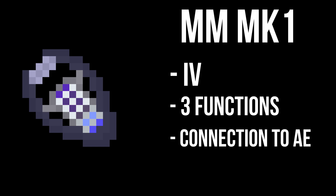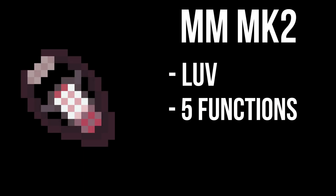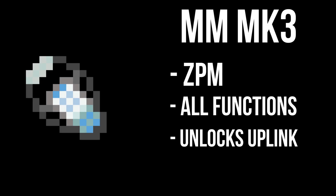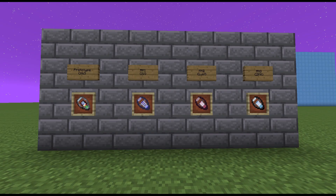A big jump from the prototype, the MK1 also allows you to connect to your ME system. The MK2, which can be built in LUV, unlocks the final two functionalities — copying and moving — bringing the total to five. The MK3 has the same functionalities as MK2 but unlocks the ability to interface with the Matter Manipulator Uplink Multiblock, the new multiblock the mod adds. At the time of this recording, the best version can be made in ZPM, though due to balancing reasons it may be gated to a much higher tier when it will be more impactful.